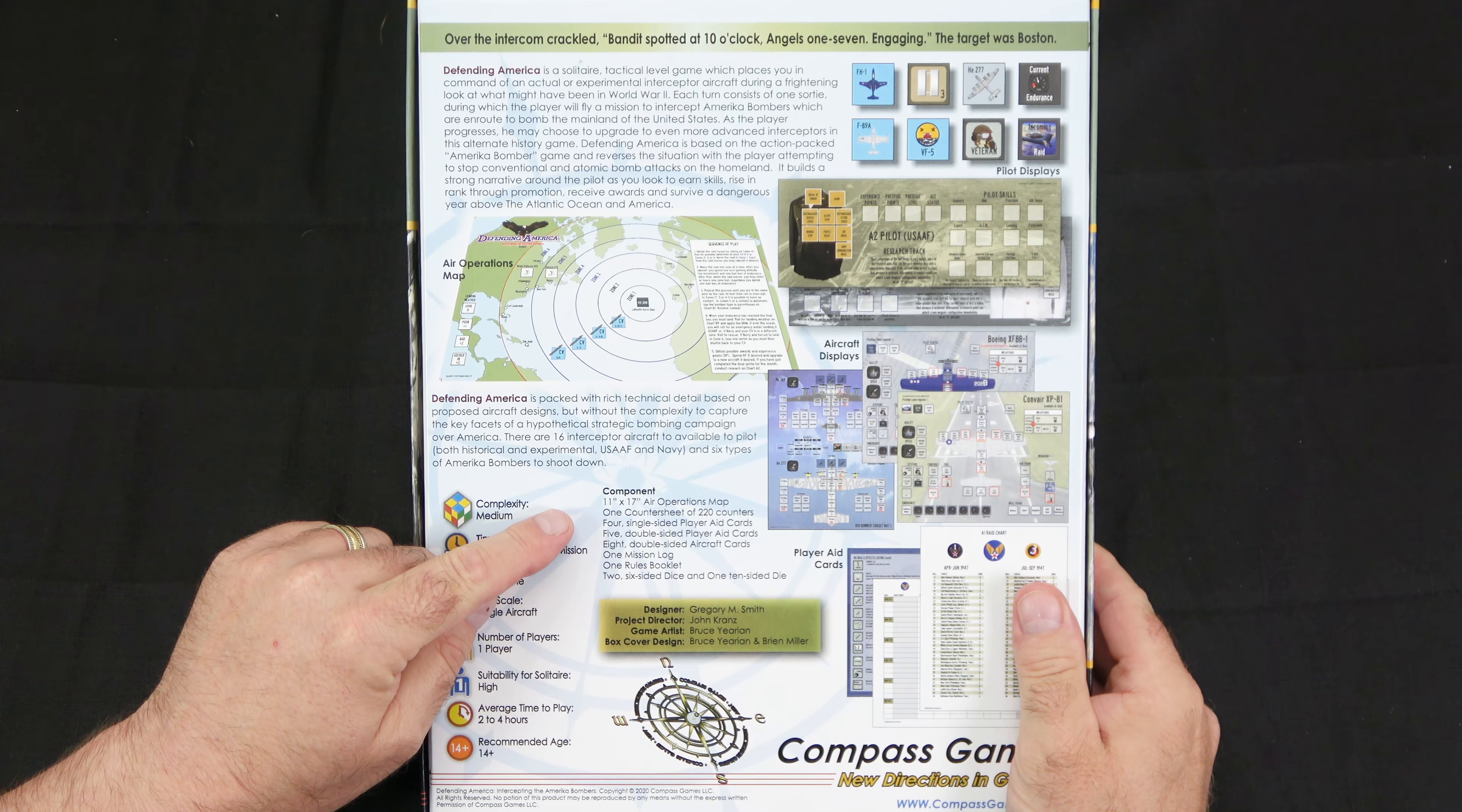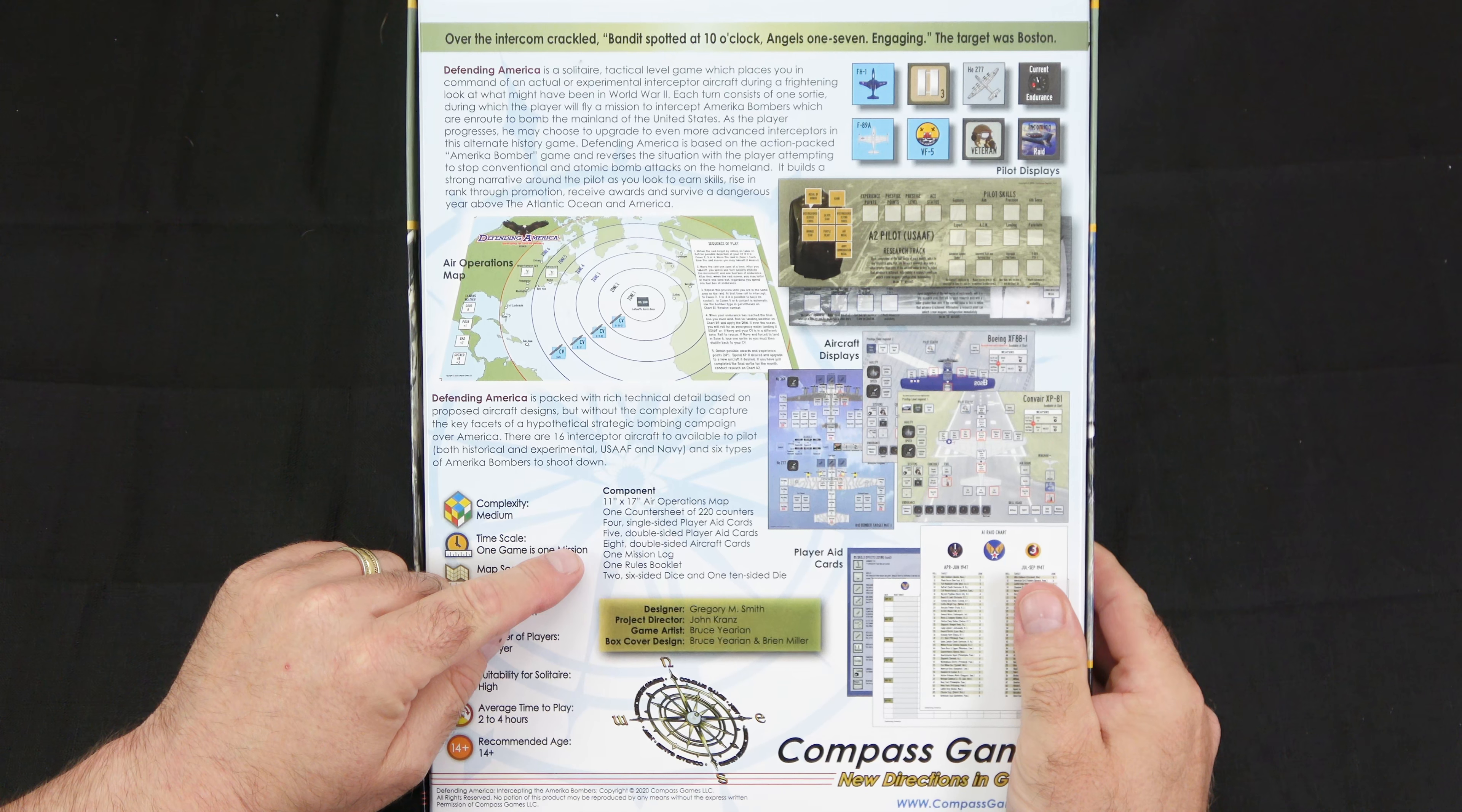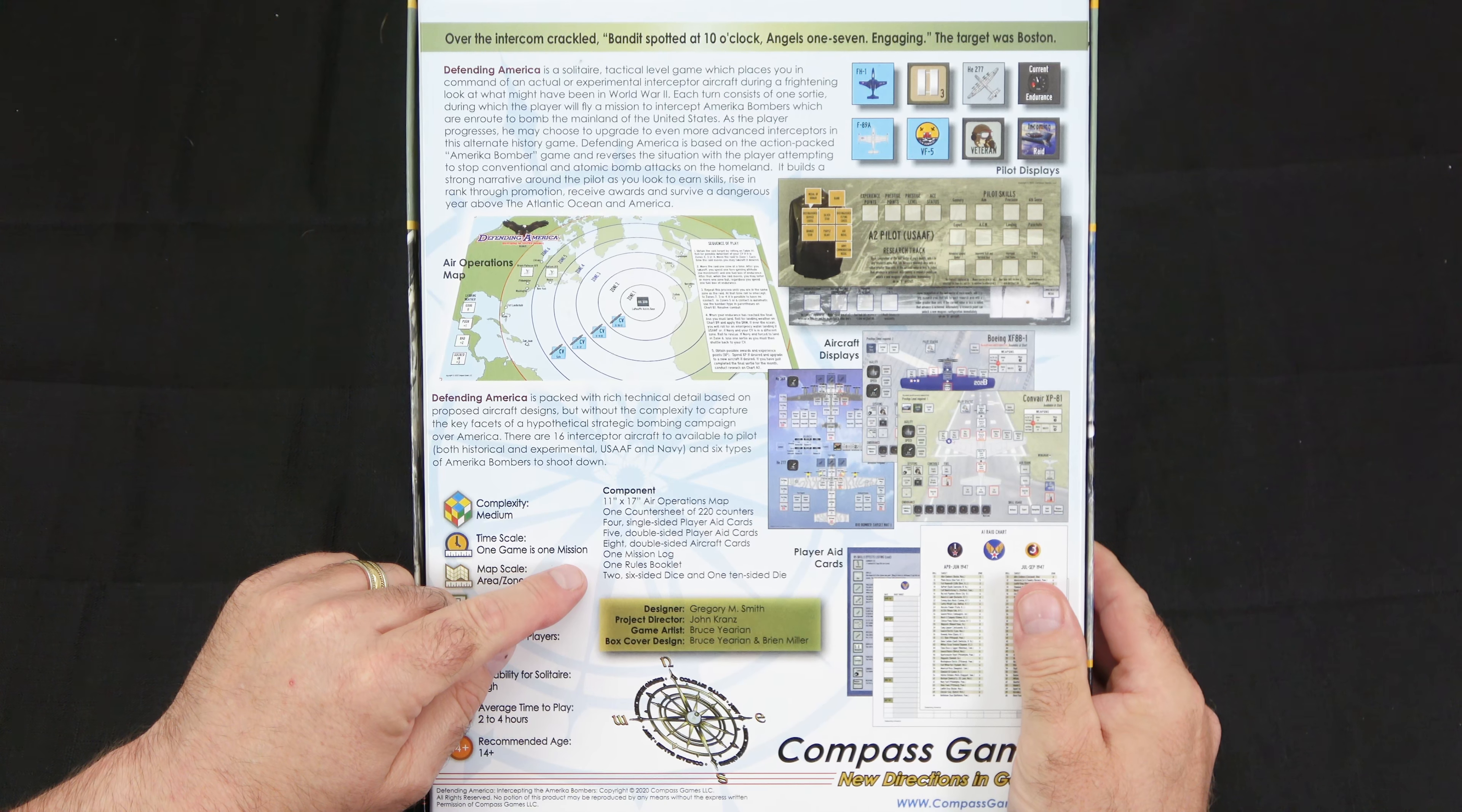In our components, we get 11 by 17 inch air operations map, a countersheet, four single-sided player aid cards, five double-sided player aid cards, eight double-sided aircraft cards, one mission log, one rules book, and two six-sided dice, and one 10-sided die. And it's rated as a medium complexity, timescale is one game is one mission, map scale area zone, unit scale single aircraft. It is for one player, obviously it's solitaire, suitability for solitaire is high, and the average time to play is two to four hours, recommended for ages 14 and up.